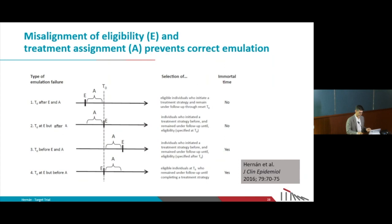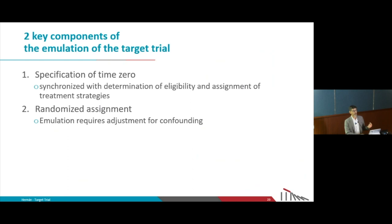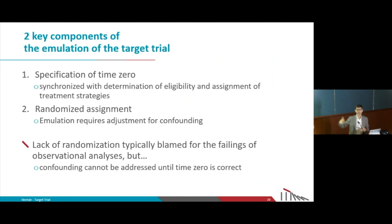Eligibility and assignment are not happening at the same time as they do in every randomized trial. This problem in observational studies is not always given enough attention. How we specify time zero has the potential to create so much bias that it doesn't matter whether there is randomization or not — if you do the same thing to data from a randomized trial, you will get the same bias. So before we worry about lack of randomization, we need to make sure that time zero is assigned correctly.